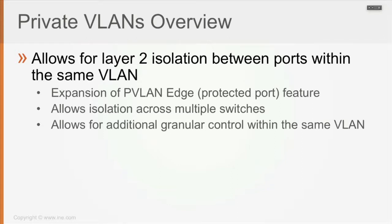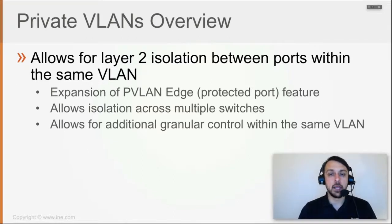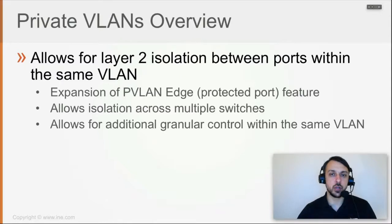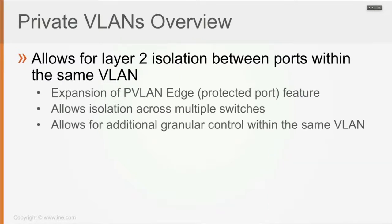Private VLAN Edge, as we saw, was all or nothing. By default, the switch allows all traffic back and forth between all ports in the same VLAN — all IP and non-IP traffic. But when you put two ports as protected, all IP and non-IP traffic is blocked. You cannot selectively choose what to do. For example, if you have a switch with five ports configured as Private VLAN Edge, there's no traffic at all back and forth between those five ports whatsoever.